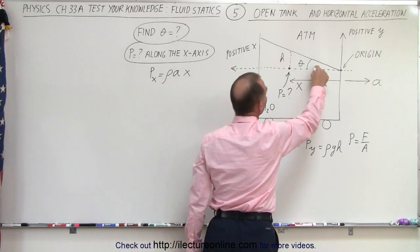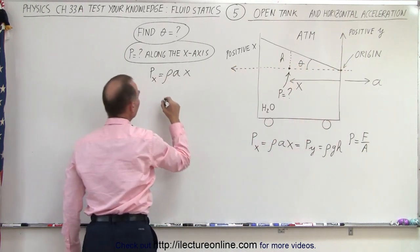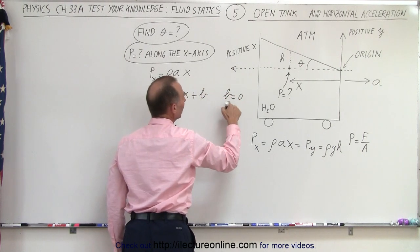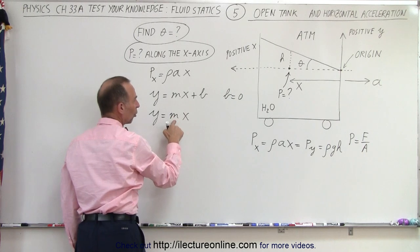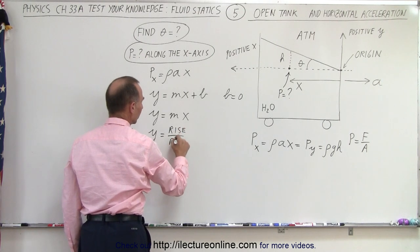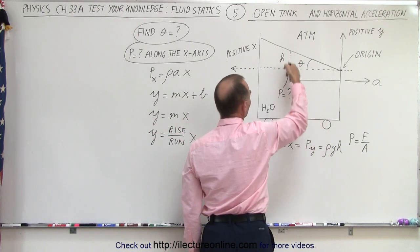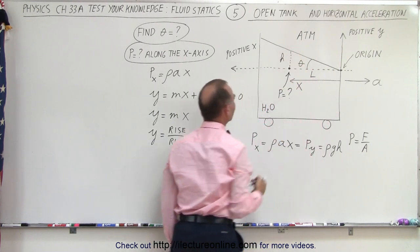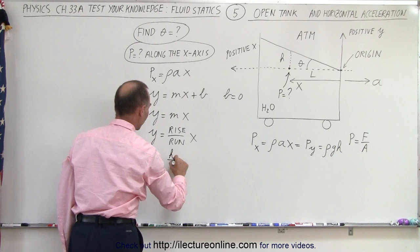We can see that the water surface is a straight line. Since the y-axis is positive upward and the x-axis is positive to the right, we can define the line as y = mx + b. In this case b equals zero because the line goes through the origin, so y = m·x. The slope is the rise over the run. The horizontal distance is x and the vertical distance is h, so y = (h/l)·x, where l is the horizontal length.